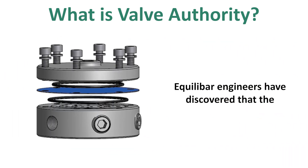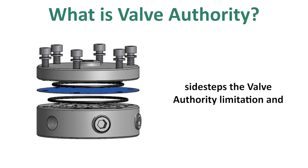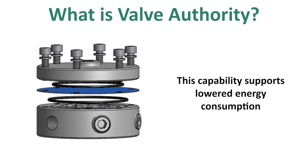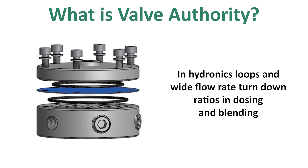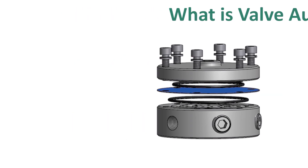Equilibar engineers have discovered that the 1000 to 1 turndown of their novel control valve sidesteps the valve authority limitation and provides stable control of ratios down to 1 or 2 percent. This capability supports lowered energy consumption in hydronics loops and wide flow rate turndown ratios in dosing and blending, up to the limitation of the flow meter.